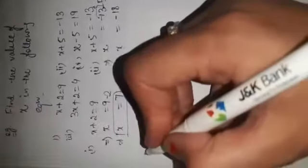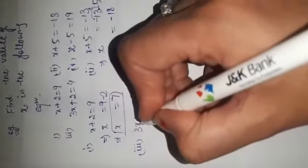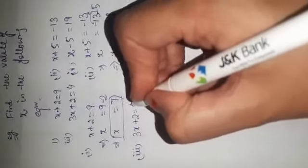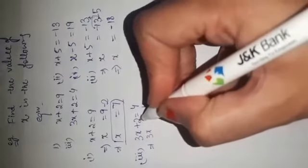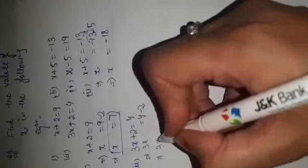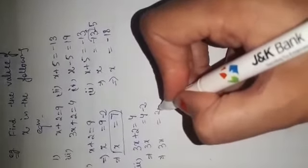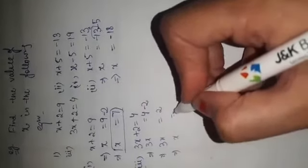Now third part is 3x plus 2 is equal to 4. 3x is equal to 4. Plus 2 will be shifted to right hand side. It will become minus 2. 3x, 4 minus 2 is 2. Now 3 and x are multiplying to each other. So x is equal to 2 by 3. X is equal to 2 by 3. Multiply term changes to divide.